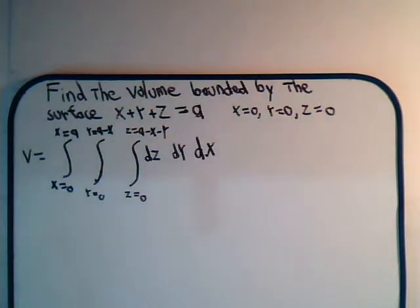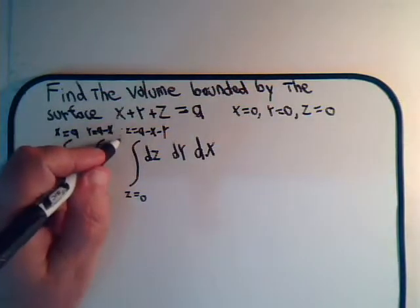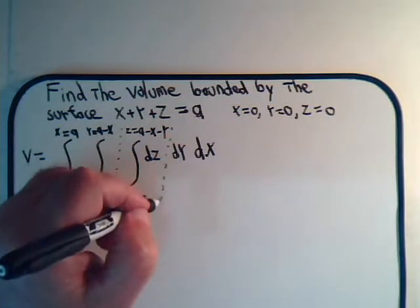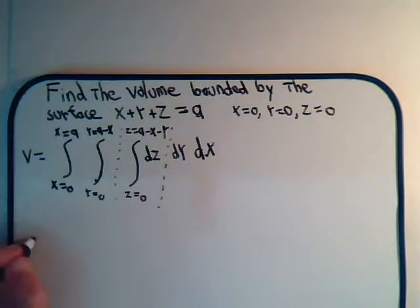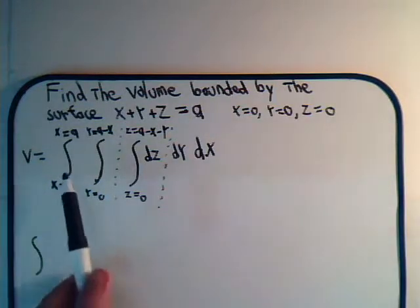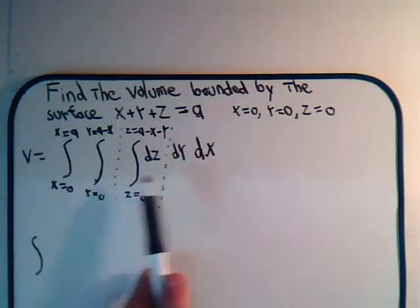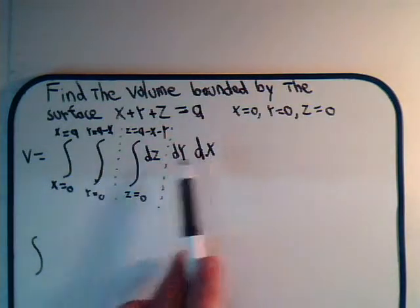One thing about these double and triple integral problems is there's a lot of steps involved, so we have to be careful and see if we can kick our way through it without making any mistakes. As always, we start with the innermost integral first, and let's take this to the outside. When we're writing the volume integral out, this would be the z integral, this would be the y integral, this would be the x integral.